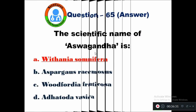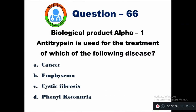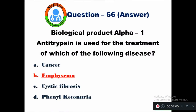Question 66: Biological product alpha-1 antitrypsin is used for the treatment of which disease? Option A cancer, B emphysema, C cystic fibrosis, D phenylketonuria. The right answer is emphysema. Alpha-1 antitrypsin is used for the treatment of emphysema.